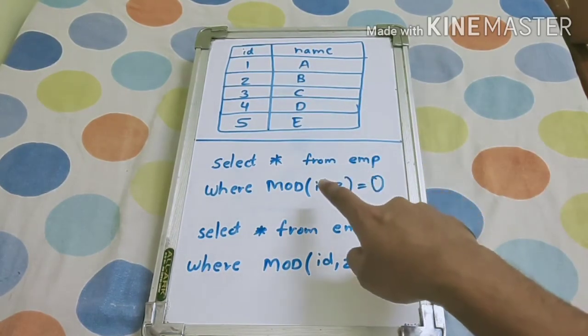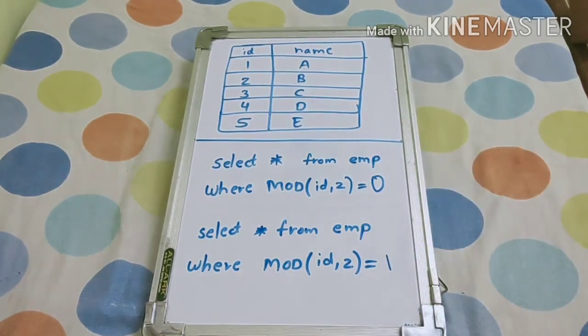And if we do 2 with 2, that is mod of 2 comma 2 equal to 0, it will print the even number of records.